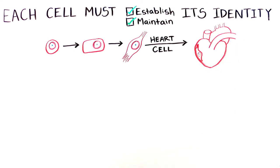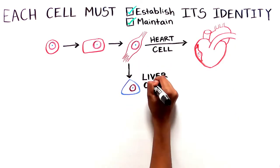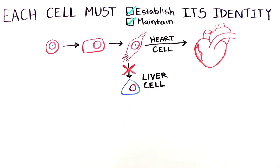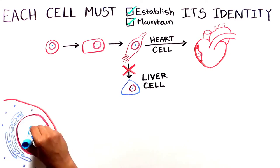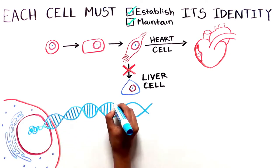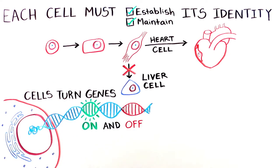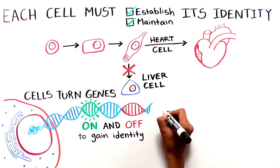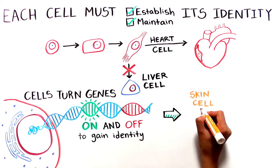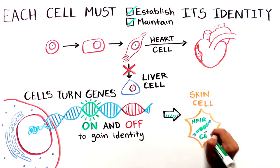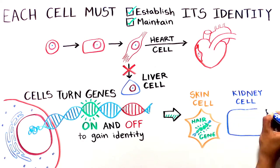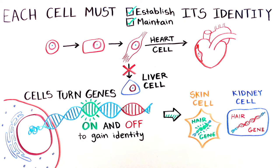A heart cell should not spontaneously turn into a liver cell. Cells gain their identity by turning particular genes on and off depending on the cell's function. For example, skin cells will turn on genes that allow for hair growth, whereas kidney cells would turn these off. These patterns of gene activity define cellular identity.